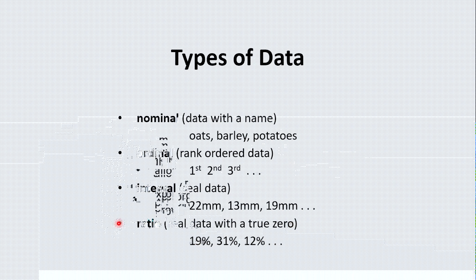And finally, that takes us to ratio data. Ratio data is real data, but it has what's known as a true zero. Now, as you can see here, I've got some percentages as an example. You can't get less than zero percent. So it has a zero point. So that's the only difference between it and interval data. An example of interval data that does not meet that requirement would be temperature, which can go below zero.